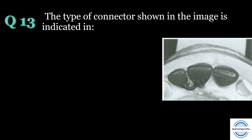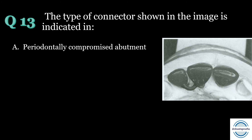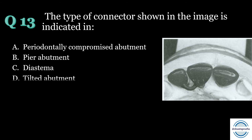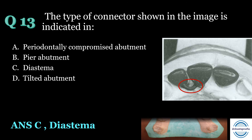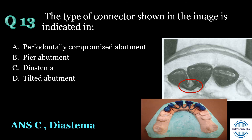Question number thirteen: The type of connector shown in the image is indicated in — A) periodontally compromised, B) pier abutment, C) diastema, or D) tilted abutment? The answer is C — diastema. The picture shows loop connectors, which are required in diastema cases so that the space is maintained. The connector consists of a loop on the lingual aspect of the prosthesis that connects the adjacent retainers or pontics.